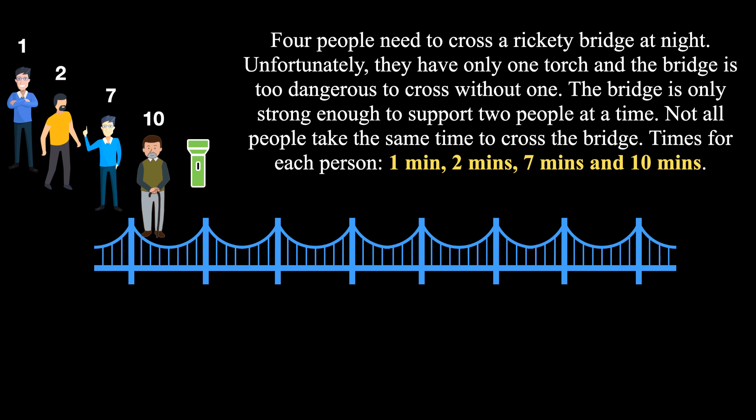Times for each person is one minute, two minutes, seven minutes and ten minutes. For example, if the two people with the speed seven and ten minutes were to cross together, it would take ten minutes leaving seventeen minutes for one of them to return and get the rest moving.